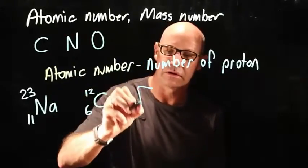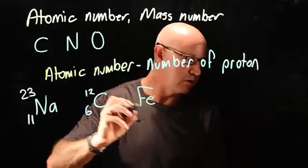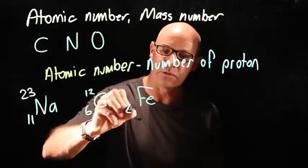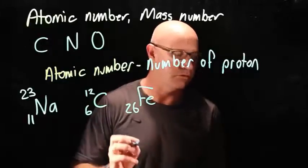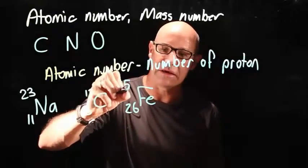Here's another one. This is iron. And here it's got 26 protons. And it's got a number up here, 56.